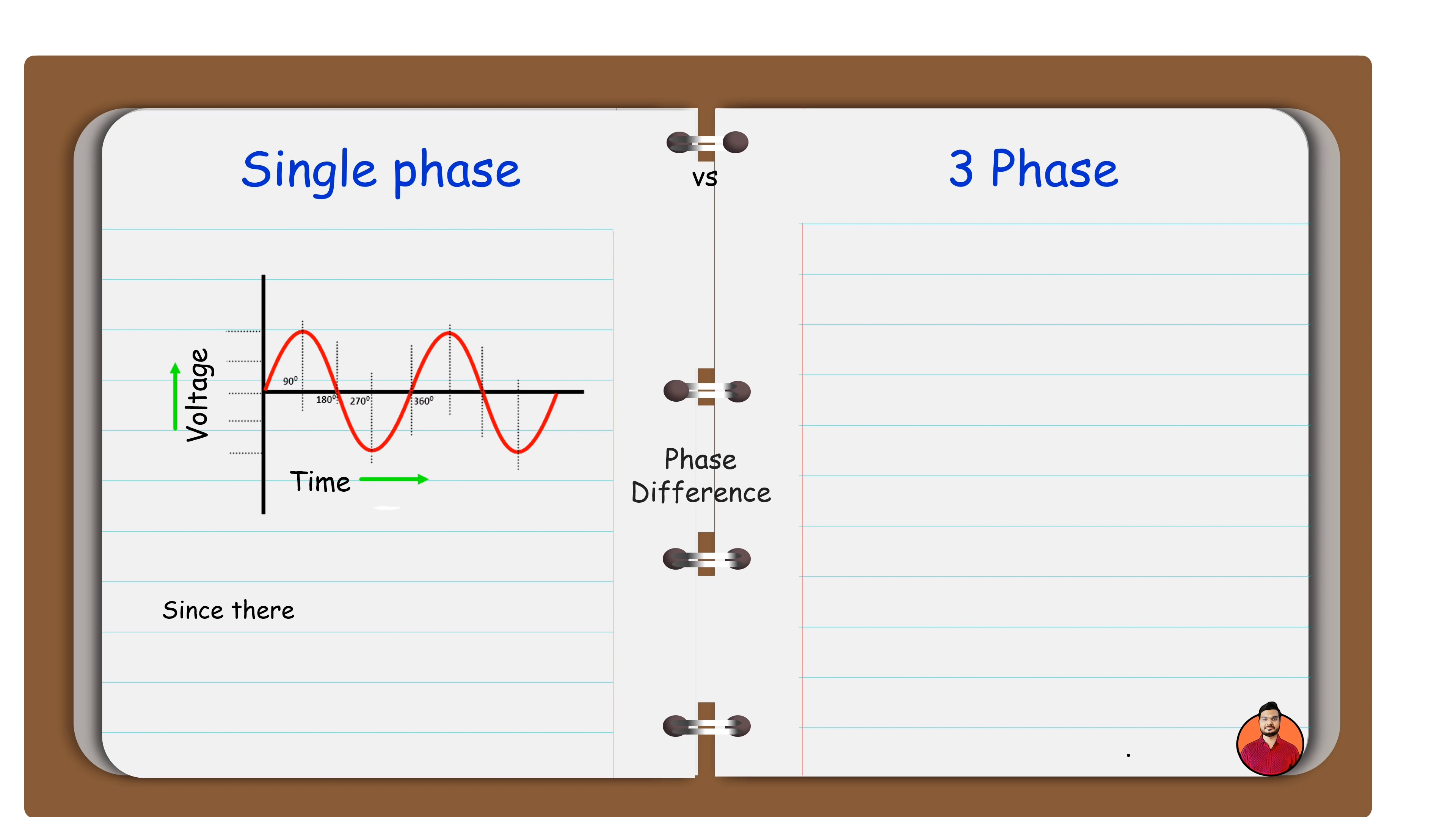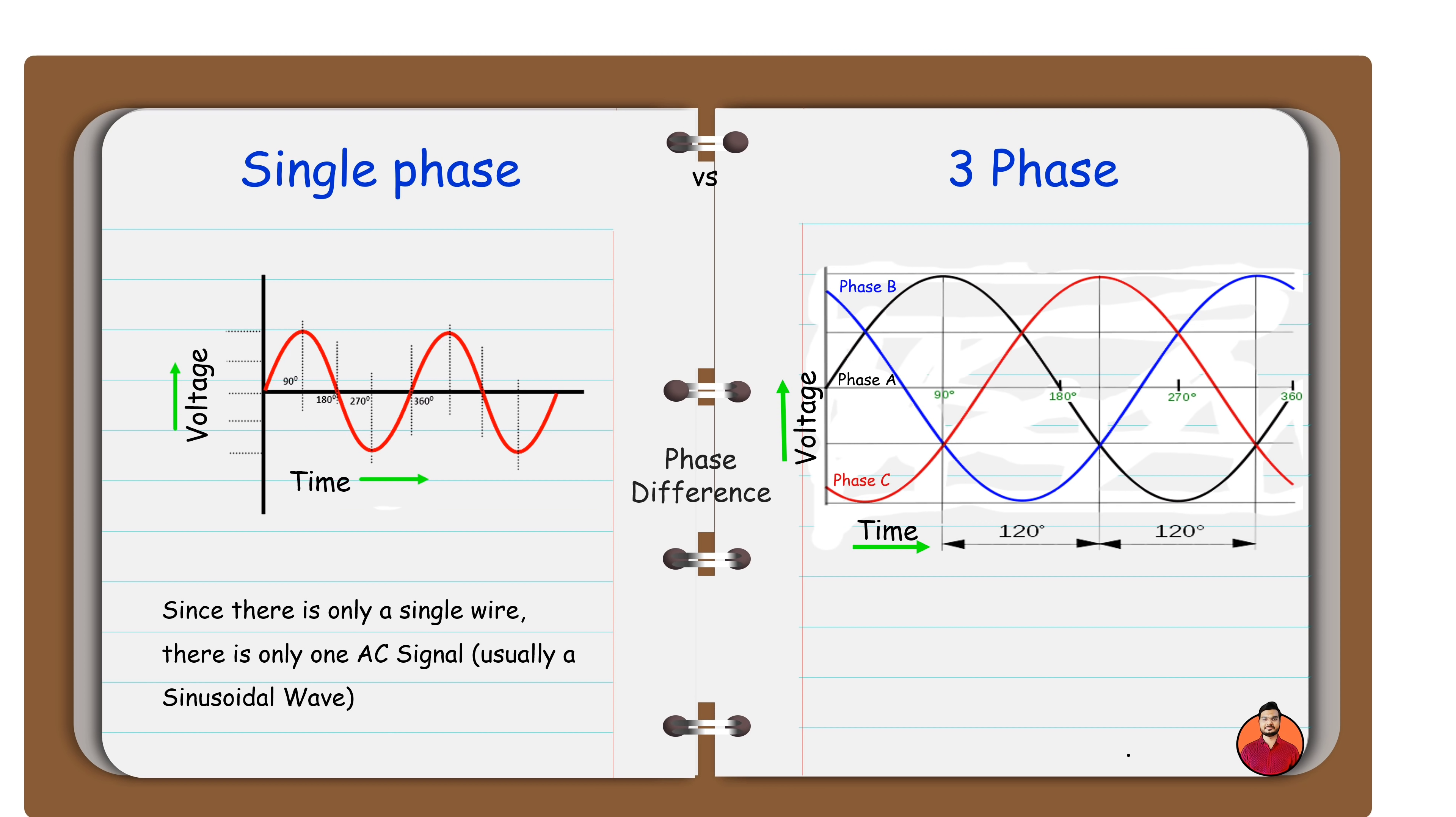Since there is only a single wire, there is only one AC signal, usually a sinusoidal wave. The three wires in three-phase supply carry AC signal of its own, and the three signals are 120 degrees apart.